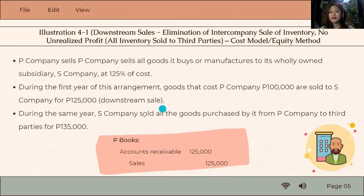During the year, S sold it to a third party for 135,000. So you can see, S company only marked it up by 10,000 and then sold it to the outside.